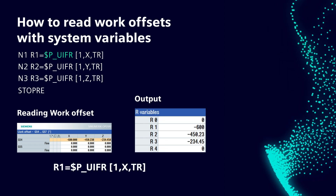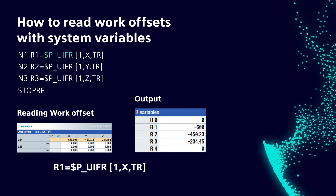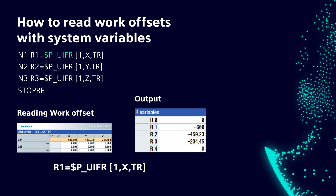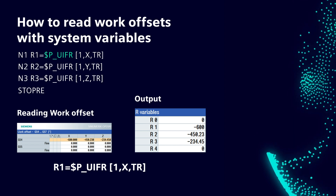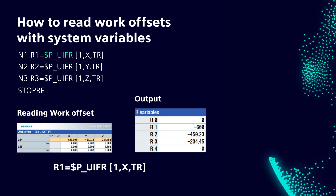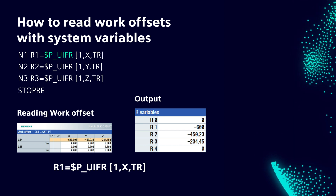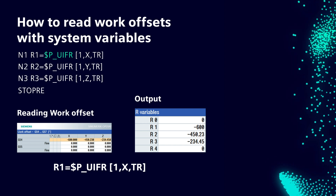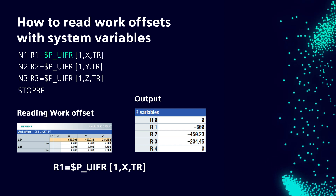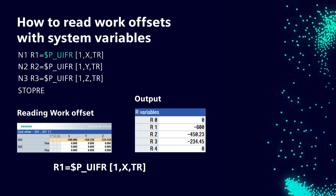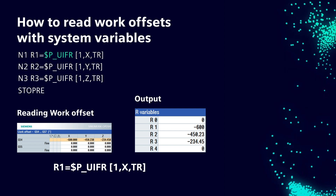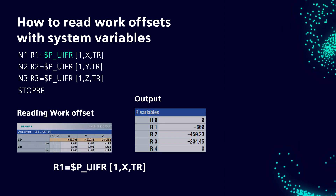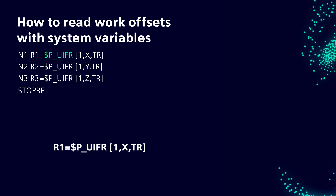We will use the $P_UIFR command to read the work offset of G54 for X, Y and Z axes. Once we execute this, the individual axis value is stored in the R variable.